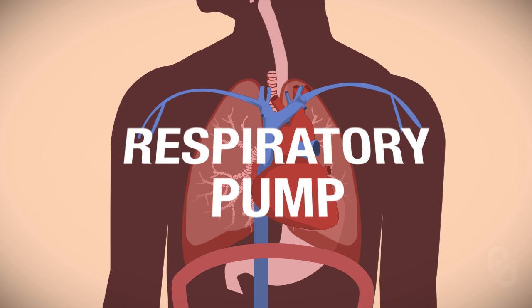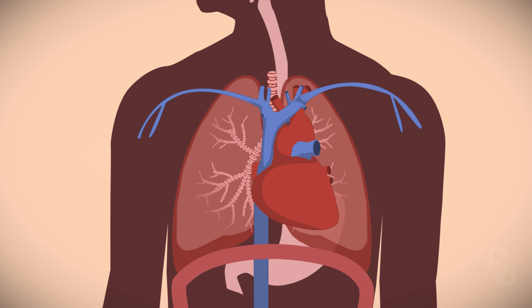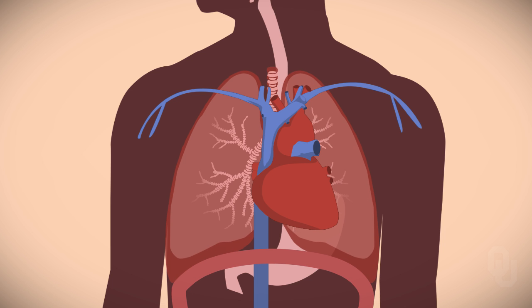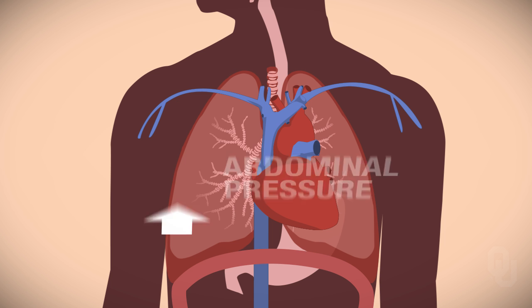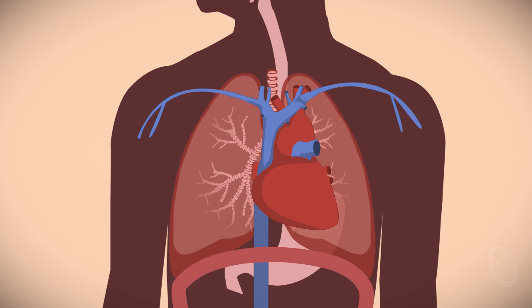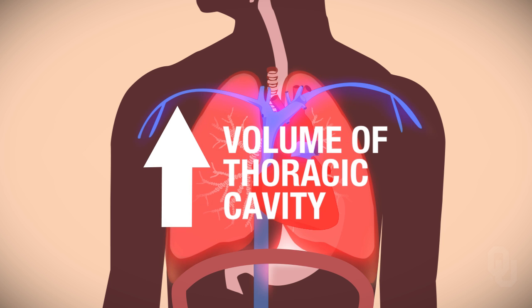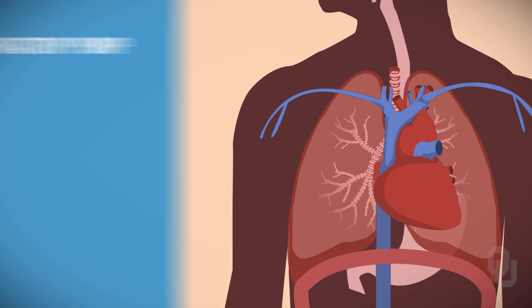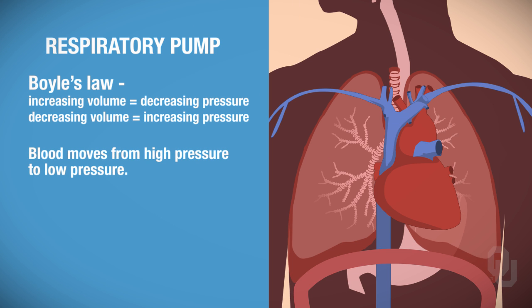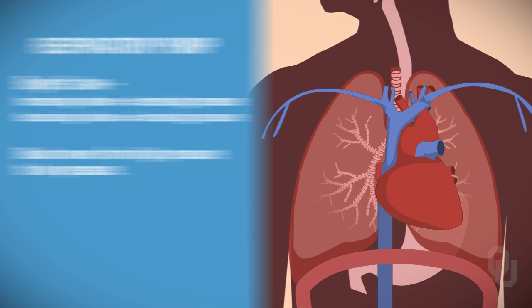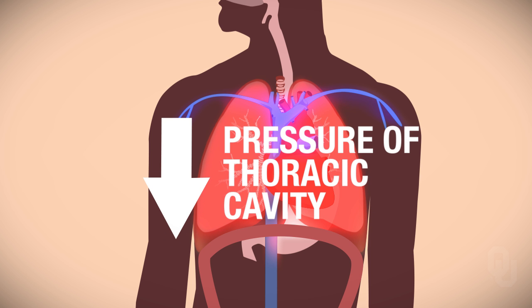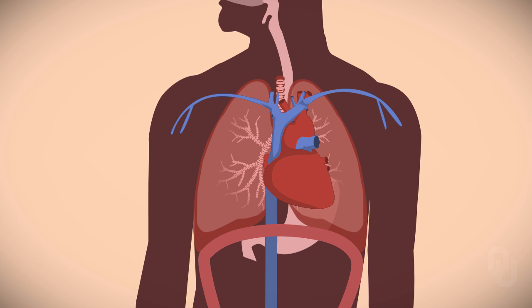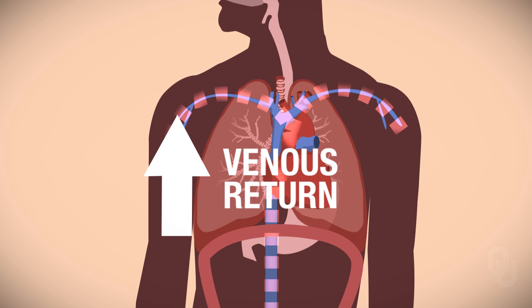The next factor is the respiratory pump. Take a deep breath — a really big one. What happens to the pressure in your abdomen while you're taking this really deep breath? It increases. When you took that big deep breath, the volume of your thoracic cavity increased, and therefore the pressure in the thoracic cavity decreases. This is due to Boyle's Law. Blood moves from high pressure toward low pressure, so with high pressure in the abdominal area and low pressure in the thoracic area, venous return increases, bringing blood back to the heart.